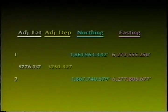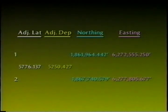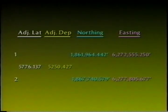Once the adjustment to latitude and departure have been applied to each traverse leg, the station coordinates have been calculated and the bearings and distance of the traverse courses must be recalculated. Periodic review of this relatively simple procedure will ensure that you are never caught off guard should your calculator blow a fuse.